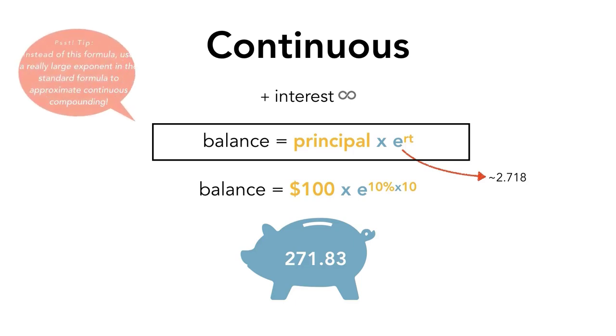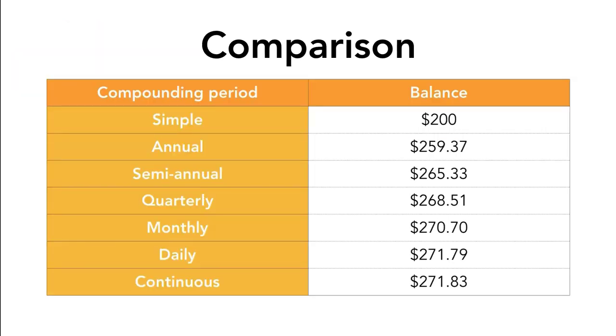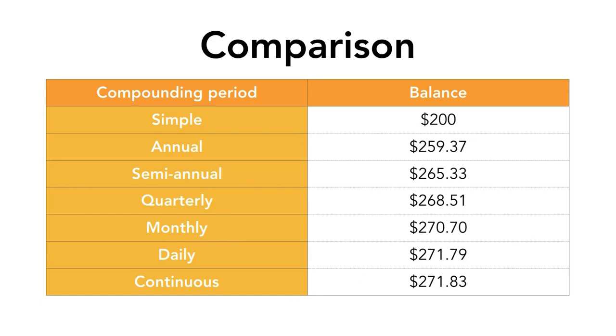Let's compare the results from the different periods of compounding. From this, you will have noticed that as the compounding periods get shorter and shorter, you see a smaller and smaller difference. Also, the higher the compounding frequency, the higher the balance. This makes intuitive sense because the more frequently the interest is compounding, the more our interest earns interest.